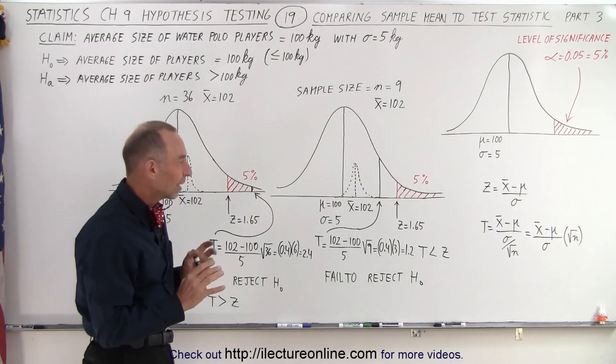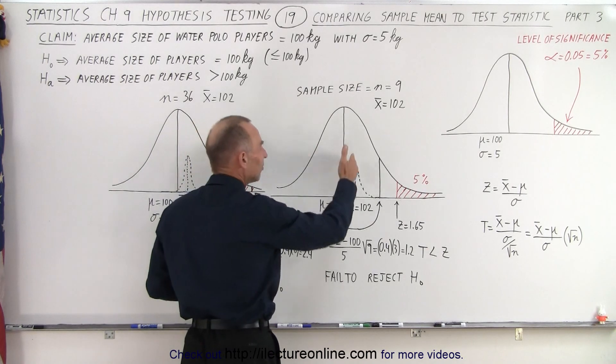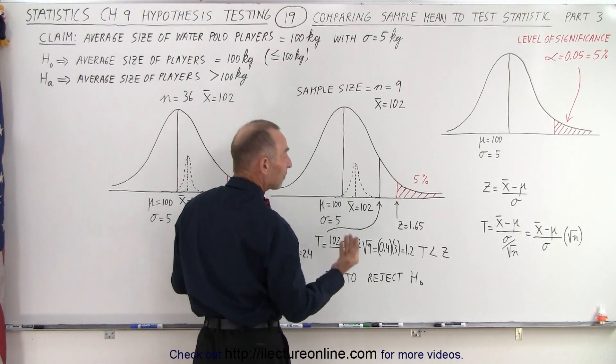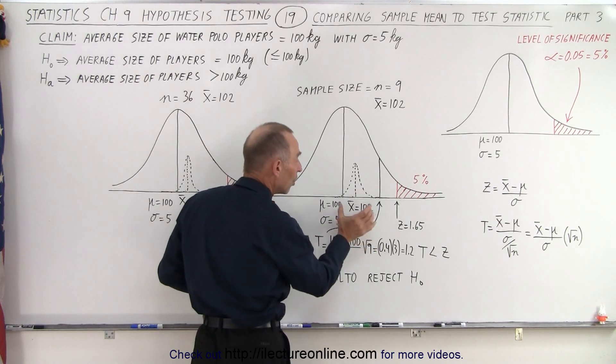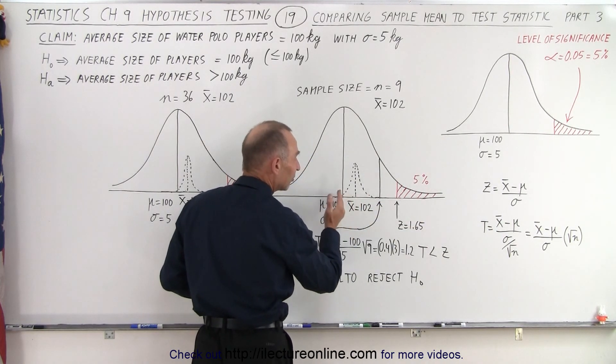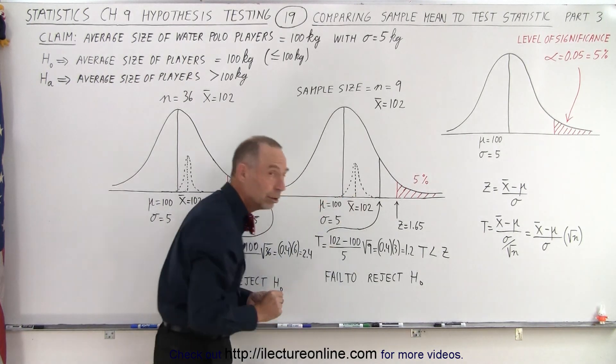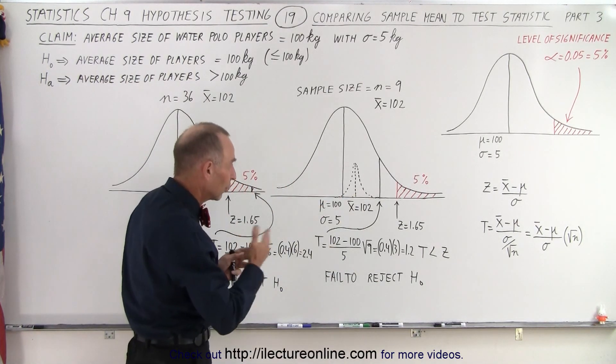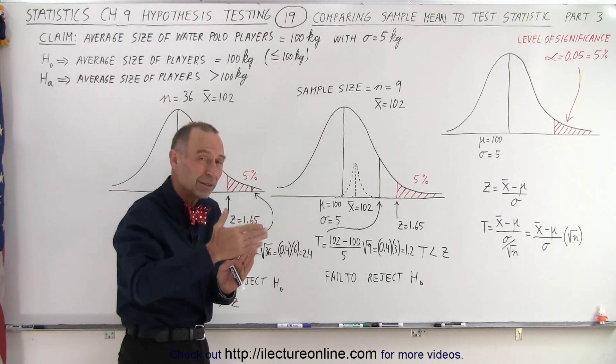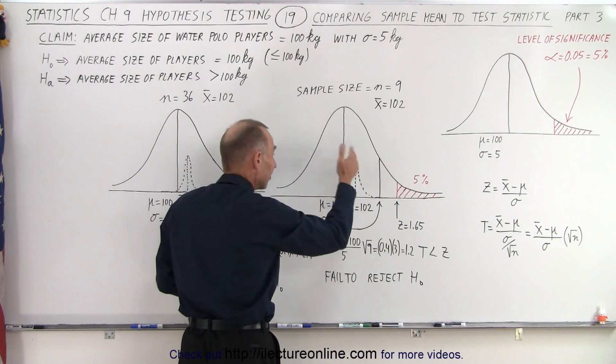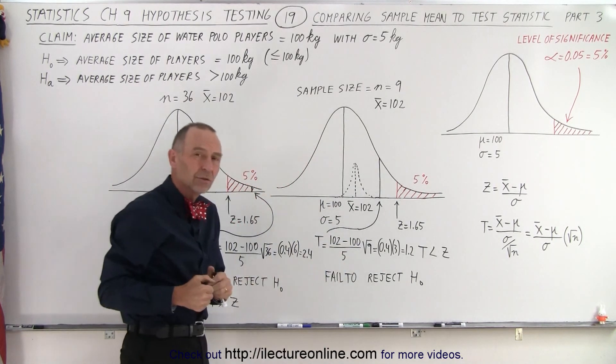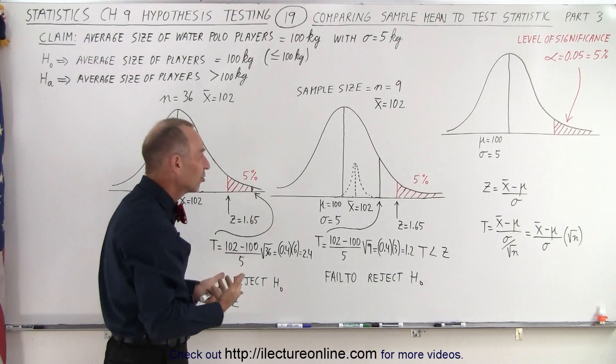Notice that there's two things at play. One is what is the mean of the sample. Two, what is the sample size. The two combined will move the test statistic back and forth. Notice that if the difference is going to be smaller, instead of going from 100 to 105, it's going from 100 to 102, the difference between the population mean and the sample mean, you need more data so you can make a more confident decision.